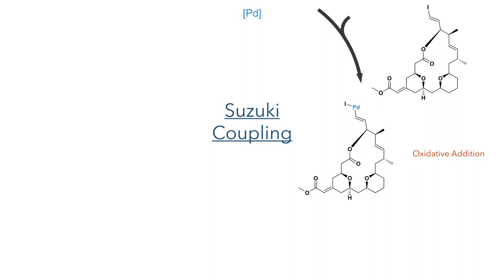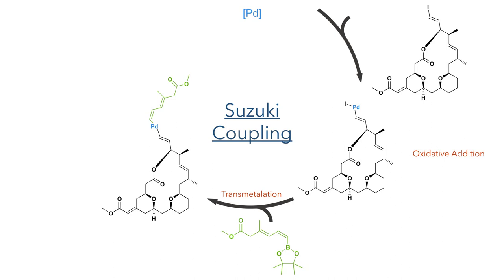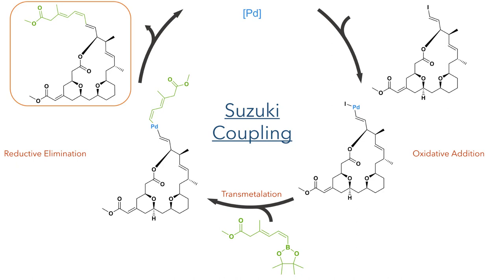With this enoate now installed, all that remained to complete the synthesis was the completion of the triene methyl ester fragment. This was done using a Suzuki coupling. Palladium first undergoes oxidative addition into the carbon-iodine bond, and transmetalation then occurs with an organoborane. The palladium, now bound to two carbon fragments, undergoes reductive elimination to form a carbon-carbon bond, completing the synthesis of exigeolide in a remarkable 13 steps.